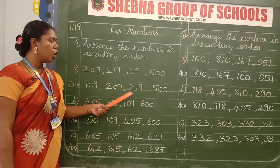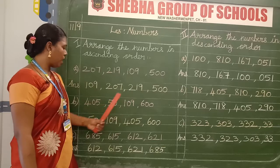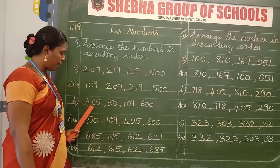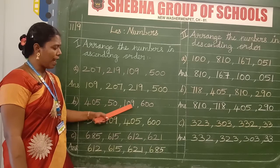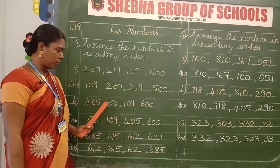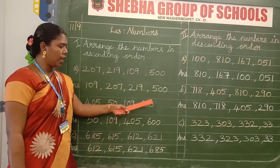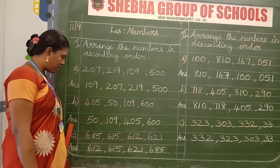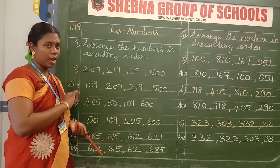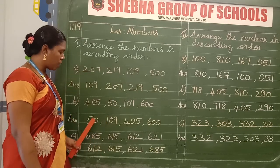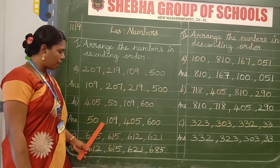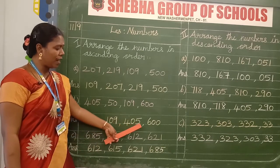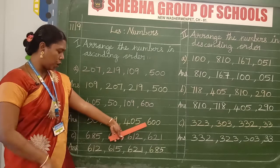After finishing A, just leave the line and write the B sum. What is the B question? 405, 50, 109 and 600. This is the question. After finishing the question, leave the line and start the answer. What is the ascending order answer? Smaller number to bigger number. So write 50, 109, 405, 600. This is the answer for ascending order.